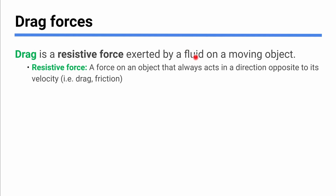When we get into forces, we'll look a lot more at fluid drag, like an object moving through something like water. For now, we're going to focus on air resistance. It's a resistive force, which just means that it opposes motion, and so the force will always act in a direction opposite to velocity. If it's moving to the right, the resistive force will be to the left, and so on.